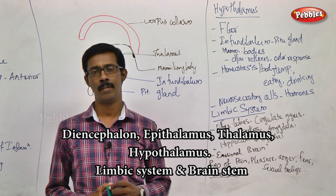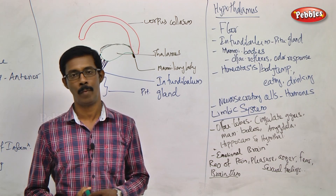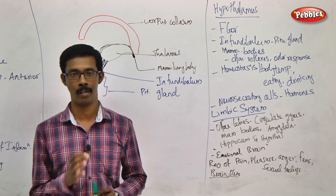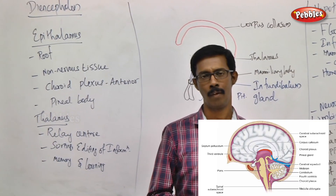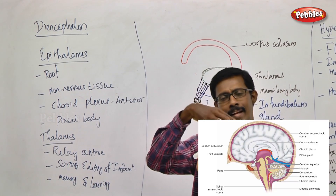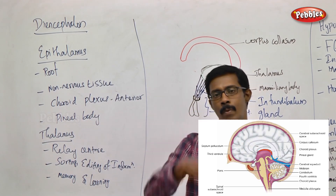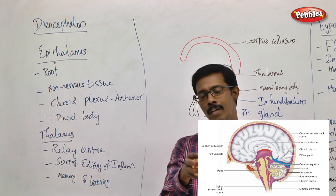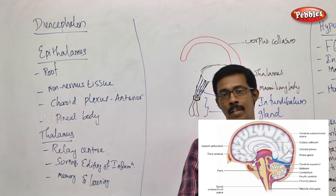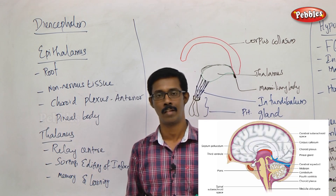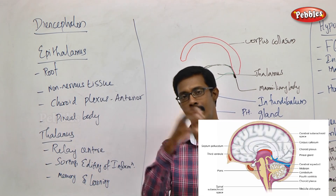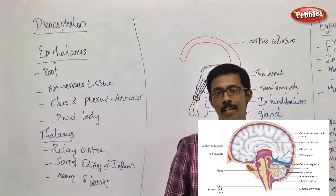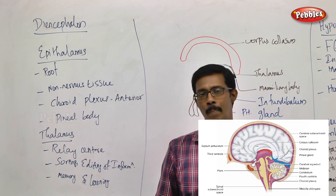We are looking at the Prosencephalon in the brain, specifically the cerebral brain. Now we are looking at the region called Diencephalon. Diencephalon is the extension of the spinal cord and the hindbrain. They are going to connect the forebrain region with the remaining portion of the central nervous system.